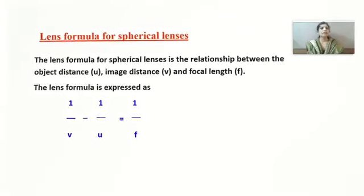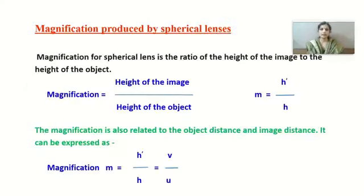The magnification produced by spherical lenses: magnification m is the ratio of the height of the image to the height of the object, so m = h'/h. Magnification is also related to object distance and image distance: m = h'/h = v/u. The two formulas for mirrors and lenses — you have to be very clear on them.